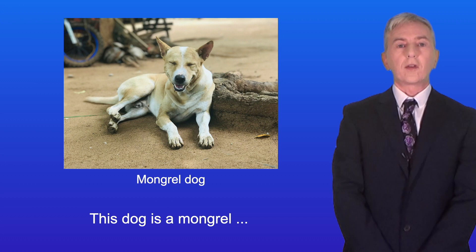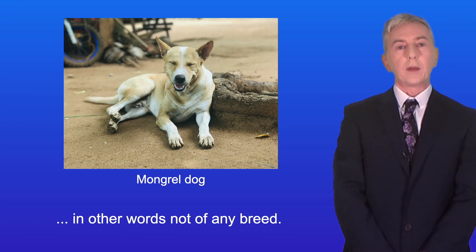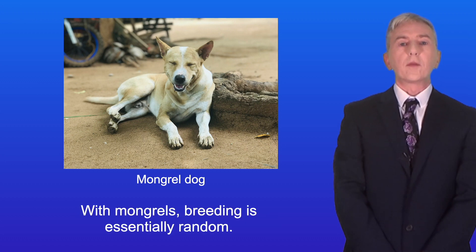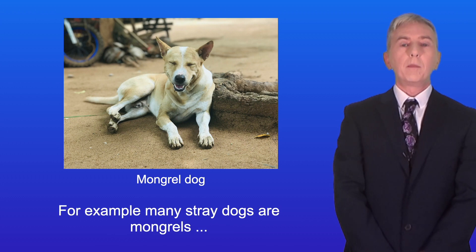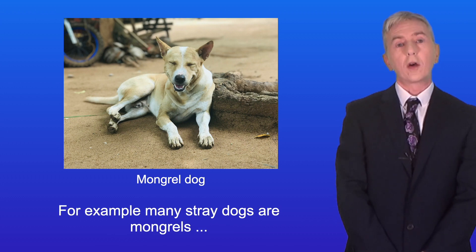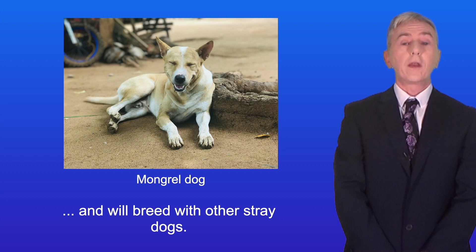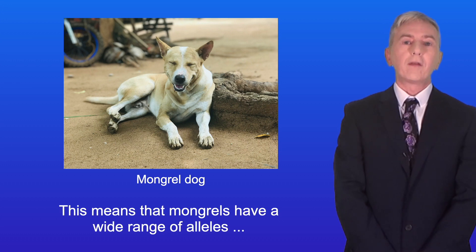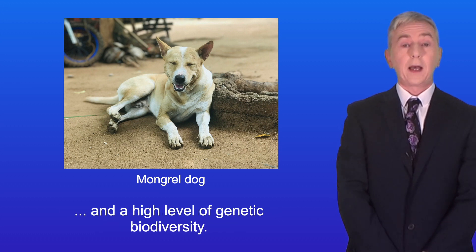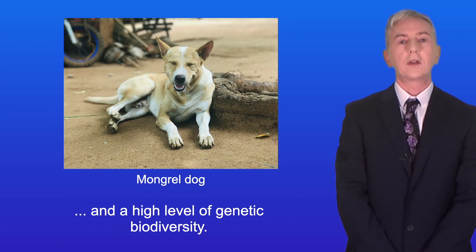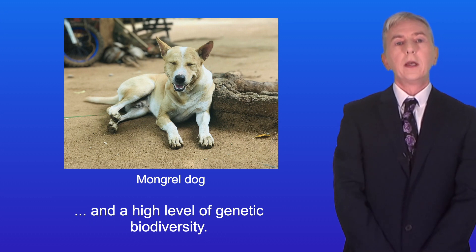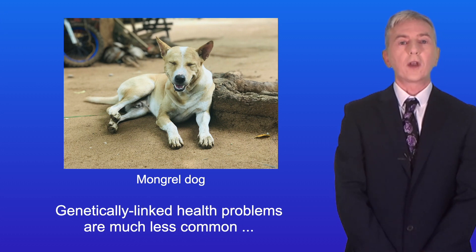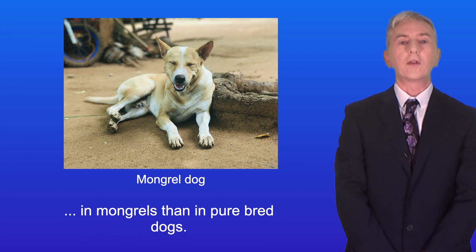This dog is a mongrel — in other words, not of any breed. With mongrels, breeding is essentially random. For example, many stray dogs are mongrels and will breed with other stray dogs. This means that mongrels have a wide range of alleles and a high level of genetic biodiversity. Genetically linked health problems are much less common in mongrels than in purebred dogs.